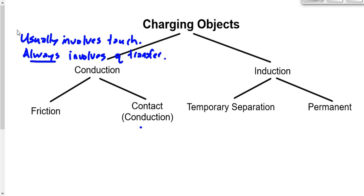Charging by contact — or charging by conduction — involves literally touching two things together, or bringing them close enough for charges to arc or jump. The goal is always to balance out the charges, though they don't always balance perfectly. For example, a zero and a ten want to balance to five and five, but sometimes they balance to two and eight instead.